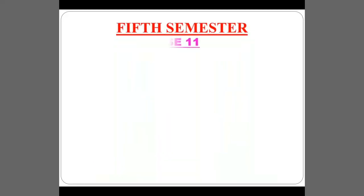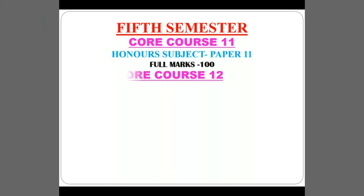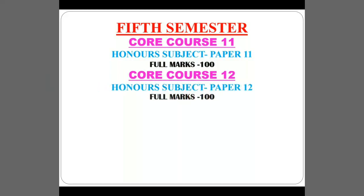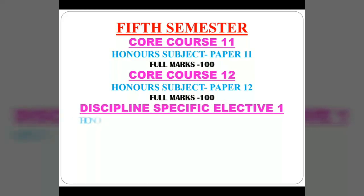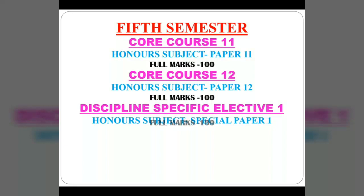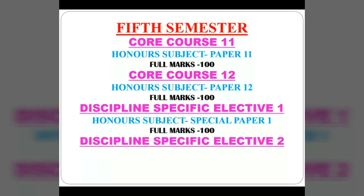Fifth semester contains core course 11, honours paper 11 with full marks 100; core course 12, honours paper 12 with full marks 100; discipline specific elective 1, which is a special paper of the honours subject chosen by the student with full marks 100; and another discipline specific elective, also a special honours paper chosen by the student with full marks 100.